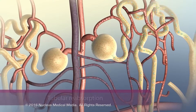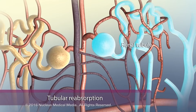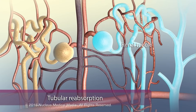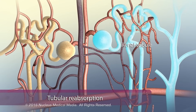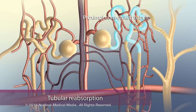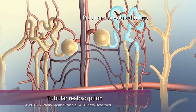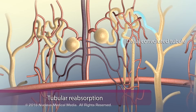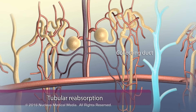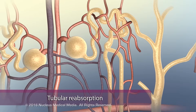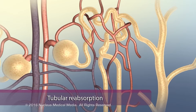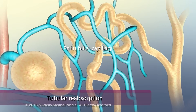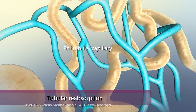During the second step of urine production, called tubular reabsorption, the fluid passes through the renal tubule, which consists of the proximal convoluted tubule, loop of Henle, distal convoluted tubule, and collecting duct. As the fluid passes through the renal tubule, it reabsorbs useful substances into the peritubular capillaries.